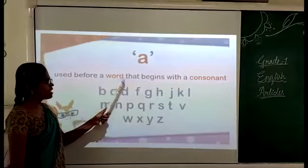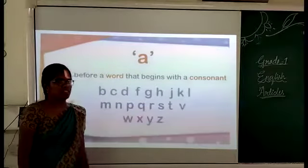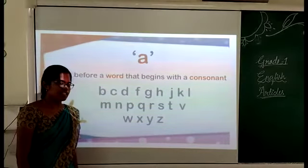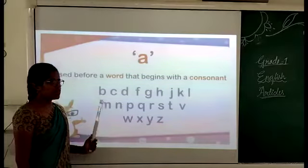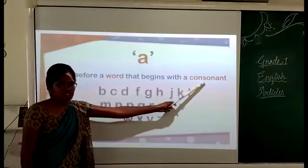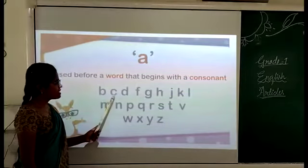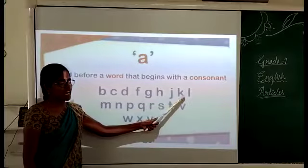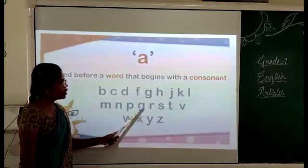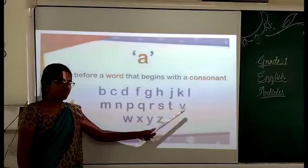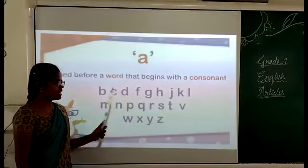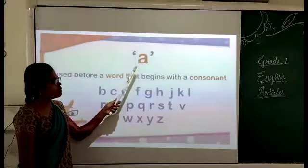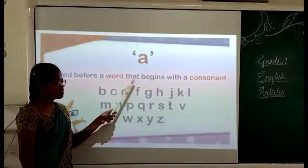A is used before a word that begins with a consonant sound. Now, how many letters do we have in the alphabet? We have 26 letters. In those 26 letters, we have 21 consonants: B, C, D, F, G, H, J, K, L, M, N, P, Q, R, S, T, V, W, X, Y, Z. These letters are called consonants. So we use A before a word that begins with a consonant.